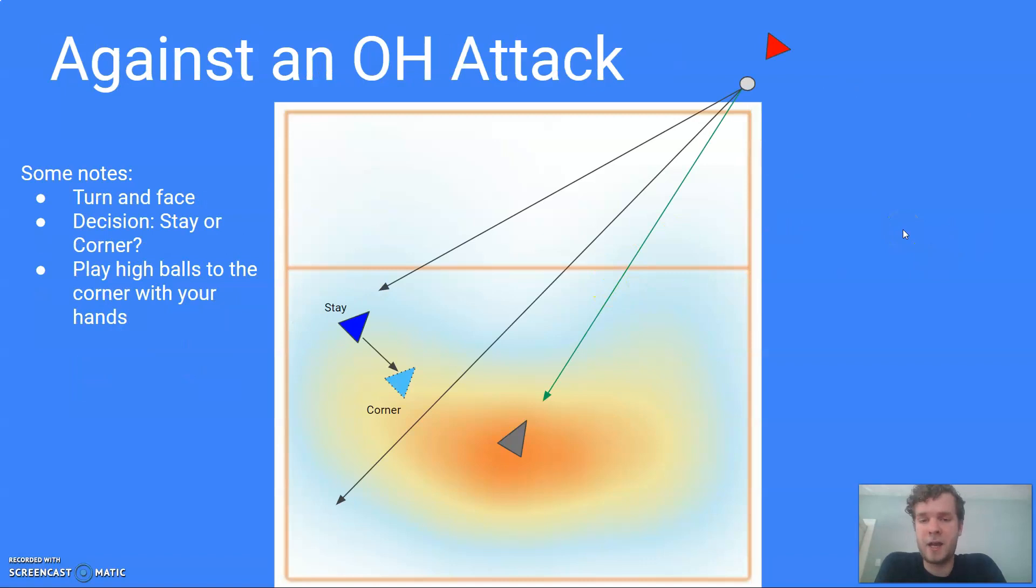So against an outside attack, it's still relatively simple, but this defender does have a decision to make. While the middle back defender just turns and faces, the left back defender starts by turning and facing and then has a decision to make. So first they turn like you see with this blue triangle and face the outside hitter.